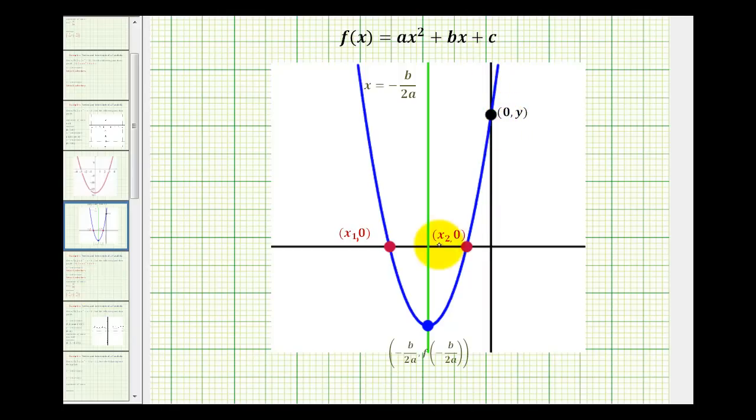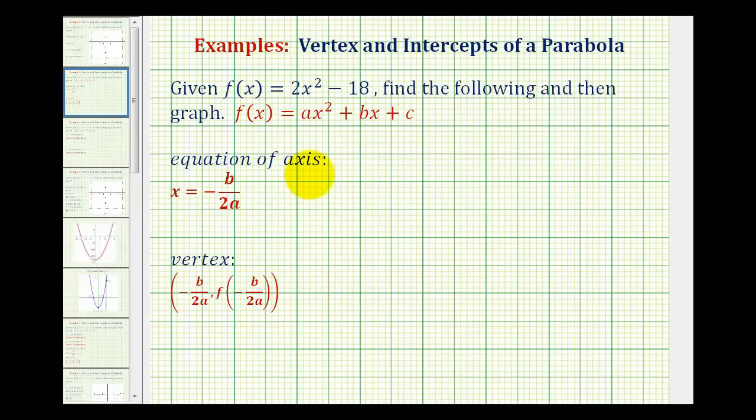Now let's go back to our function and find all of these components. We'll start by finding the equation of the axis or axis of symmetry, which is given by this formula. Looking at our function, we recognize that a is equal to positive 2. B is the coefficient of the x-term. There is no x-term, so b equals 0.